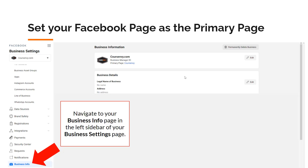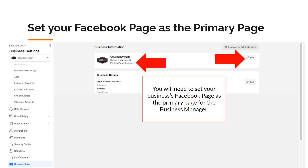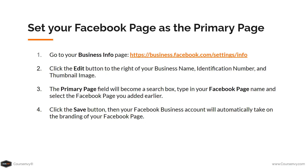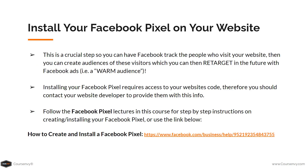Now we need to assign our Facebook page as the primary page for this business settings. Navigate to your business info page in the left sidebar of your business settings page. Click the edit button next to your business name — the primary page field will become a search box. Type in your Facebook page name that we added earlier, click save, and your Facebook business account will automatically take on the branding of your Facebook page. With this new ad account came the Facebook pixel, so you'll have to install that Facebook pixel on your website. This is a crucial step so Facebook can track the people who visit your website.